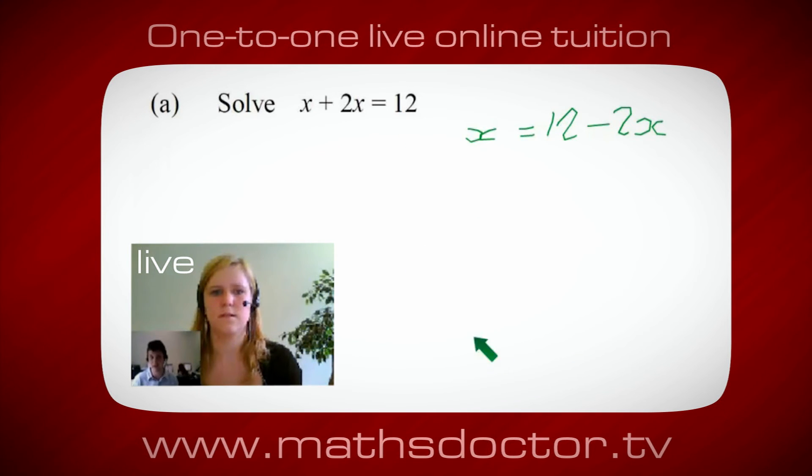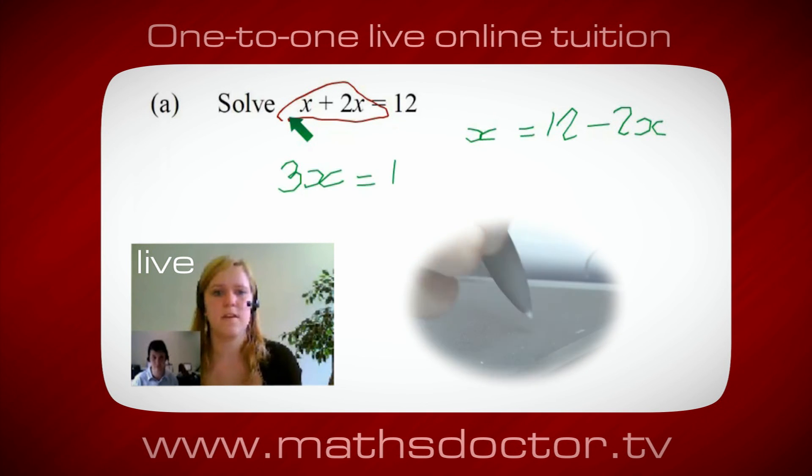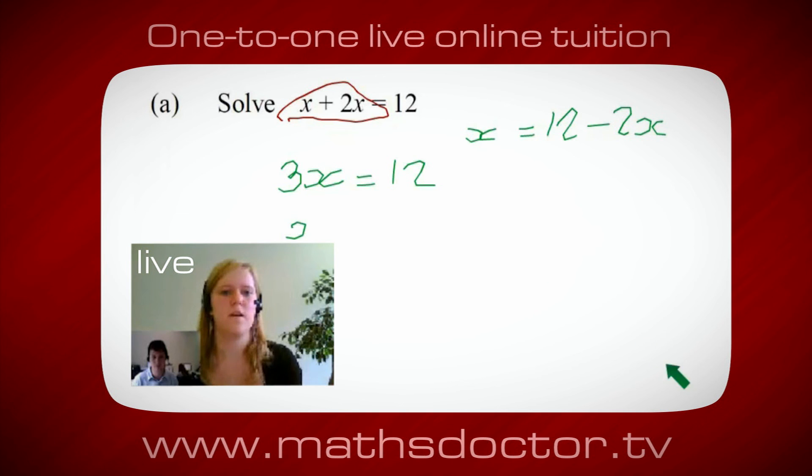OK, so a lot of the time we want to get x by itself. But what we want to do first is get all of these x's together. So can you see anything we can do with this? Get all these together in one place. Oh, OK, it's 3x, isn't it? Yeah, absolutely. So 3x equals 12. Oh, and so x equals 4. Brilliant, spot on, well done.